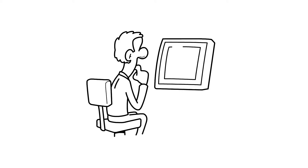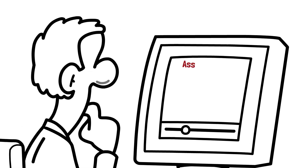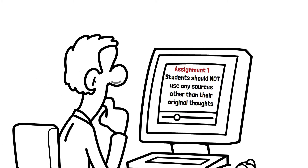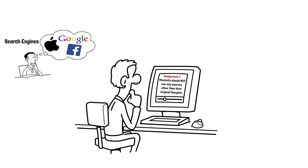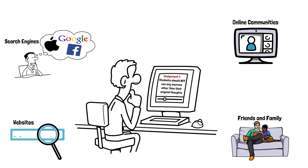Imagine a scenario where an assignment prompt strictly identifies that students should not use any sources other than their original thoughts. Despite clear directions, students may use search engines, websites, online communities, or friends and family as their sources for answers to assignment questions, which is academic dishonesty.